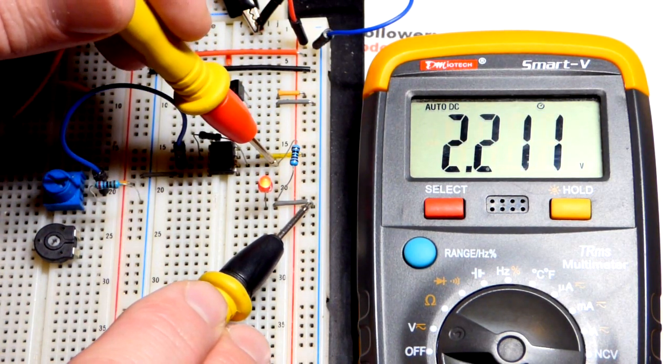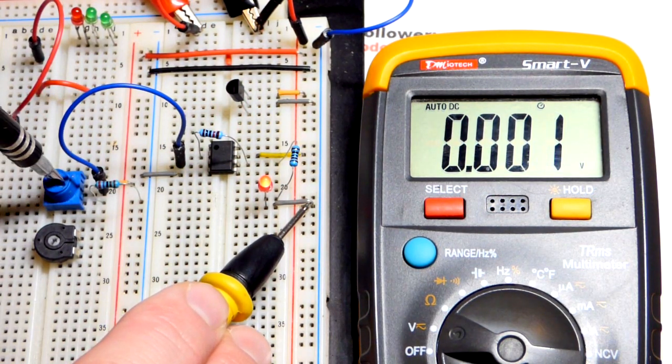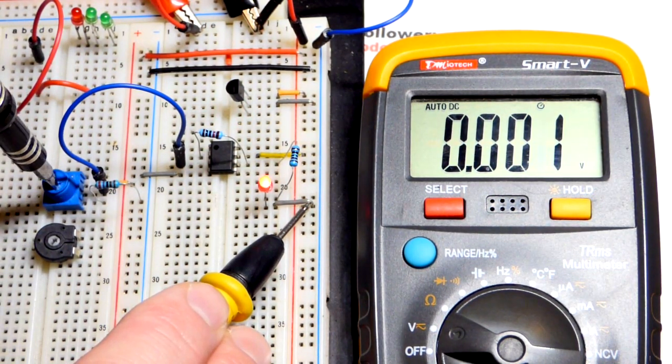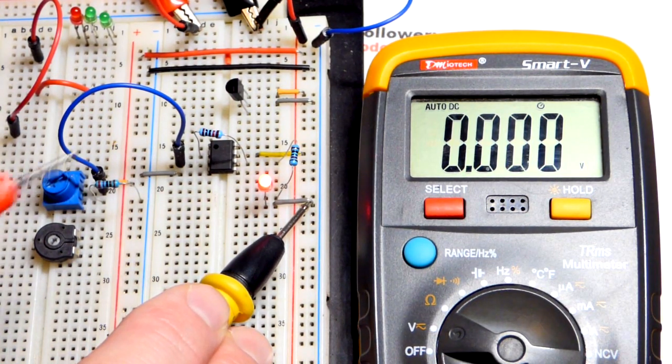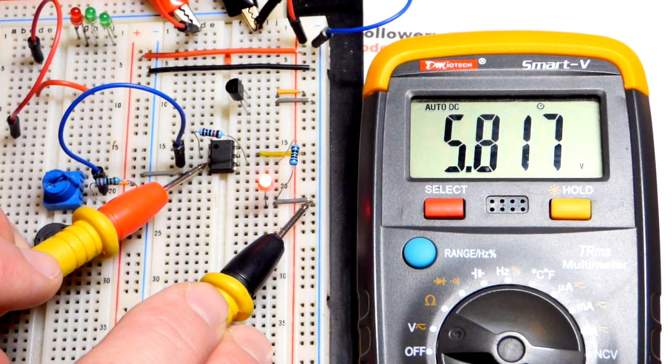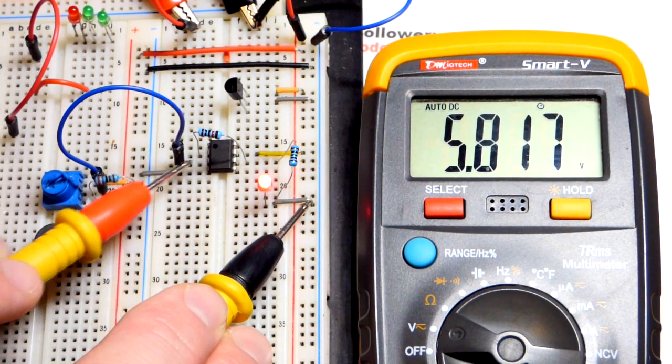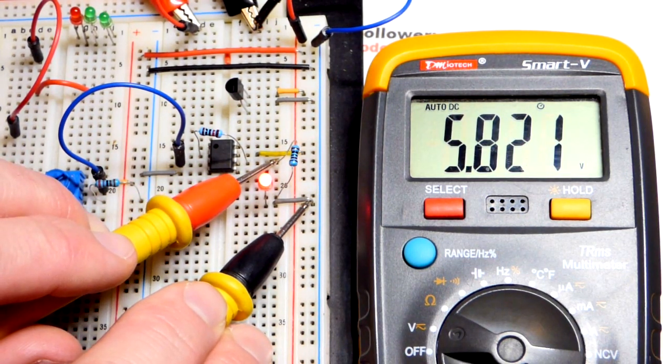We'll get the voltage there. Try not to short anything out. There you can see 2.2 volts, which makes sense since we're using a 2200 ohm resistor. Now we go over here and actually we have the same voltage. So that's good, we did a good job with that.